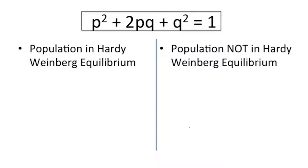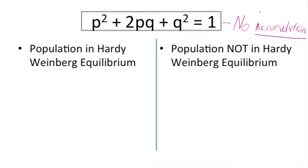In this video we're going to deal with this equation at the top of the slide called the Hardy-Weinberg equation. This equation essentially says that in a population, if this equation is true, then it is called in Hardy-Weinberg equilibrium, meaning that there is no micro-evolution occurring. Micro-evolution just means a change in allele frequencies in the population, so if this equation is true then there will not be changes in the